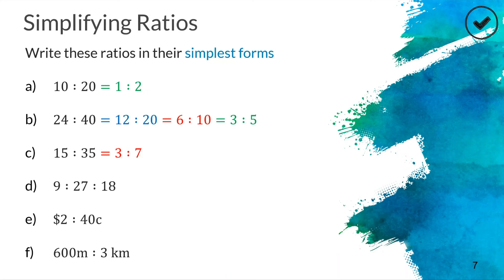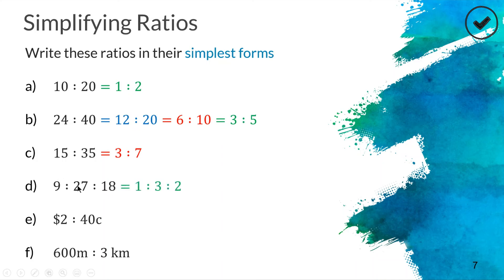Question d is similar but we have a three-part ratio, so it's a bit trickier — we need a number that multiplies into 9, 27, and 18. If you're switched on with your times tables, you'll recognize that nine is a factor of all three numbers. Nine is one lot of nine, 27 is three lots of nine, and 18 is two lots of nine. So we divide them all by nine and get one to three to two as our simplified ratio.